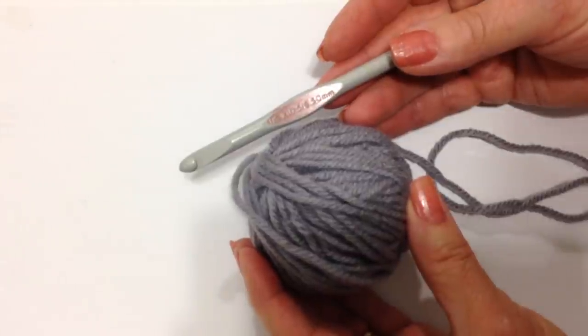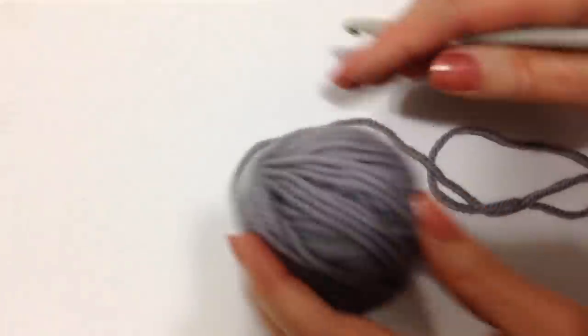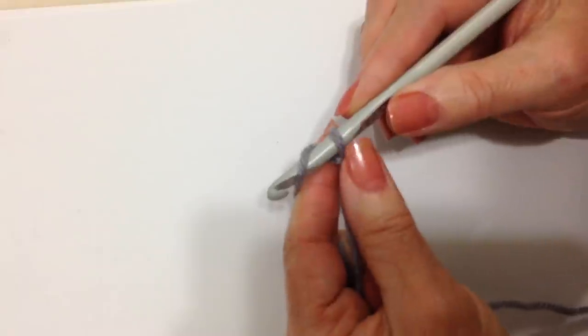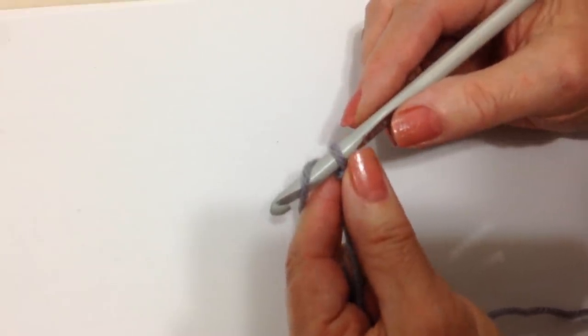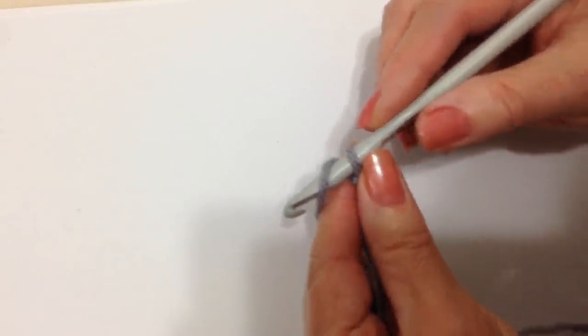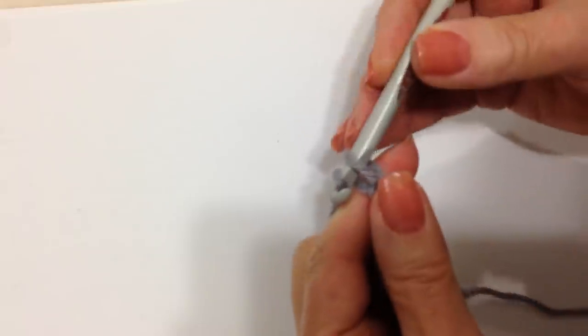I'm going to work with a 6.5 millimeter crochet hook and worsted weight yarn. To work the Elizabeth stitch you chain in multiples of two plus an additional four. So I'm going to start with chain 14.